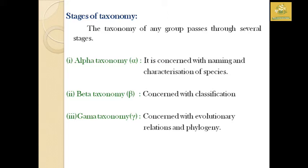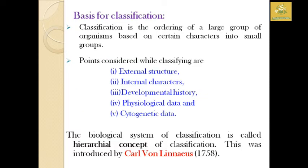The first stage is alpha taxonomy, which is concerned only with the naming and characterization of species. Beta taxonomy is concerned with the classification of particular species. Gamma taxonomy is concerned with evolutionary relationships and the phylogeny of the particular insect. The first basic form of classification is the ordering of large groups of organisms based on certain characteristics into specialized small groups.